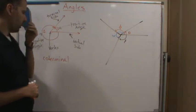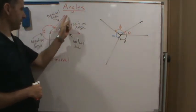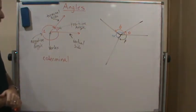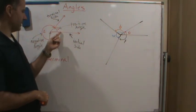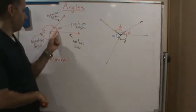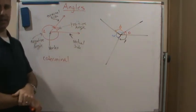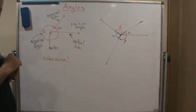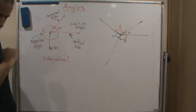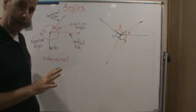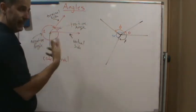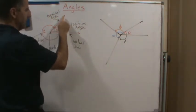We have an angle where two rays intersect at a common endpoint, which we call the vertex, and this creates an angle. The angle is basically the distance between the two rays. An angle always starts with an initial side — usually corresponding to the x-axis — and this is called the initial side. The ending side is called the terminal side.